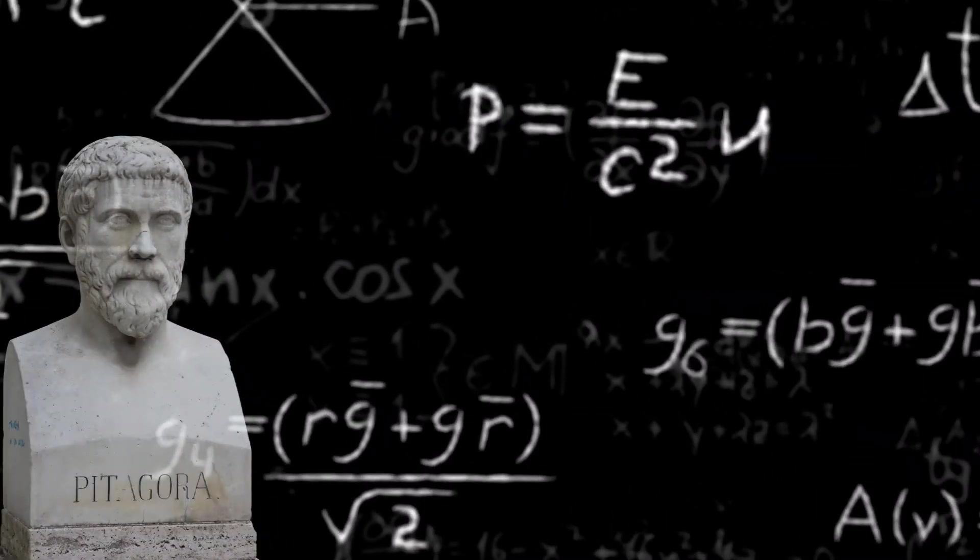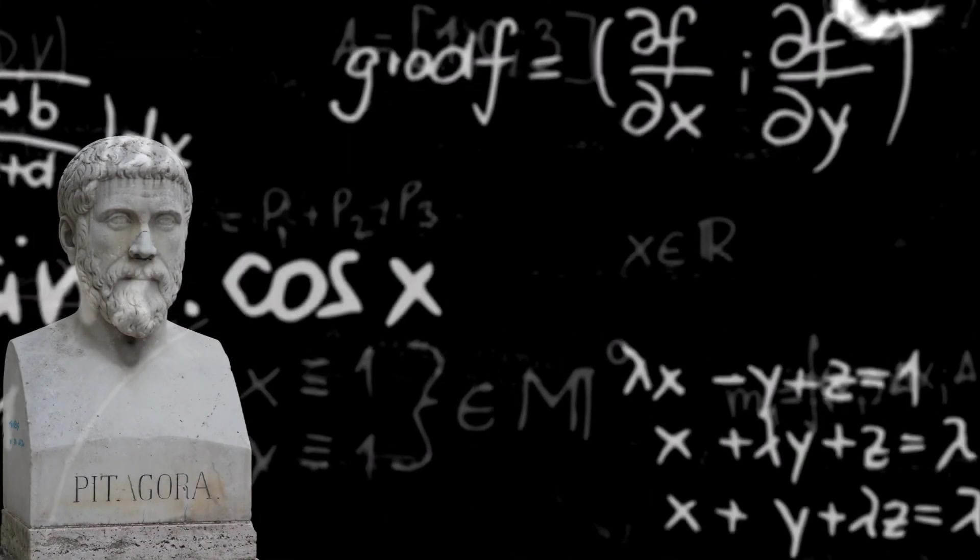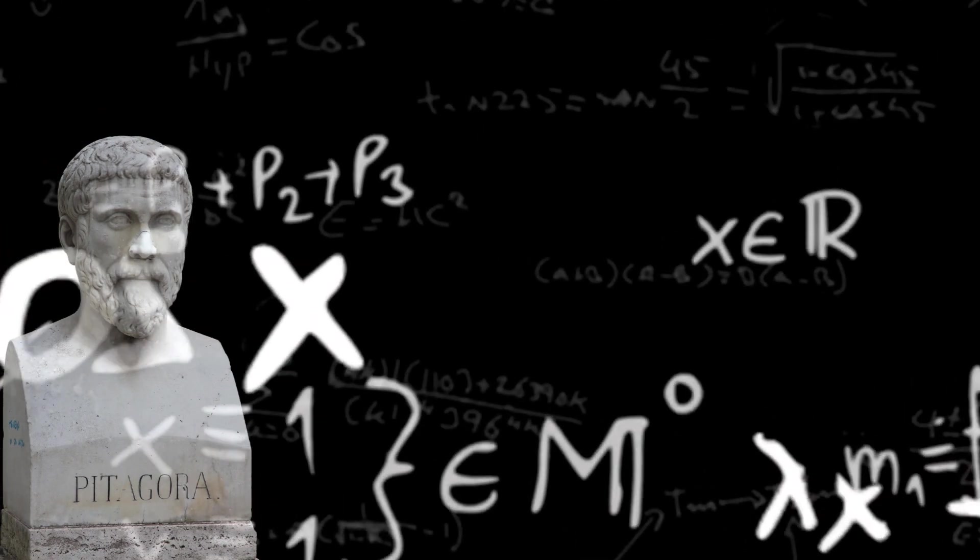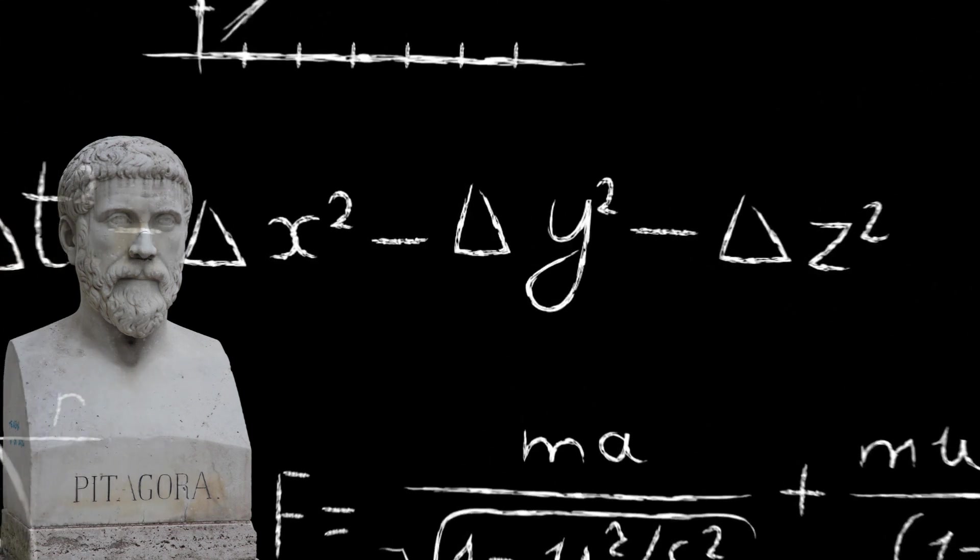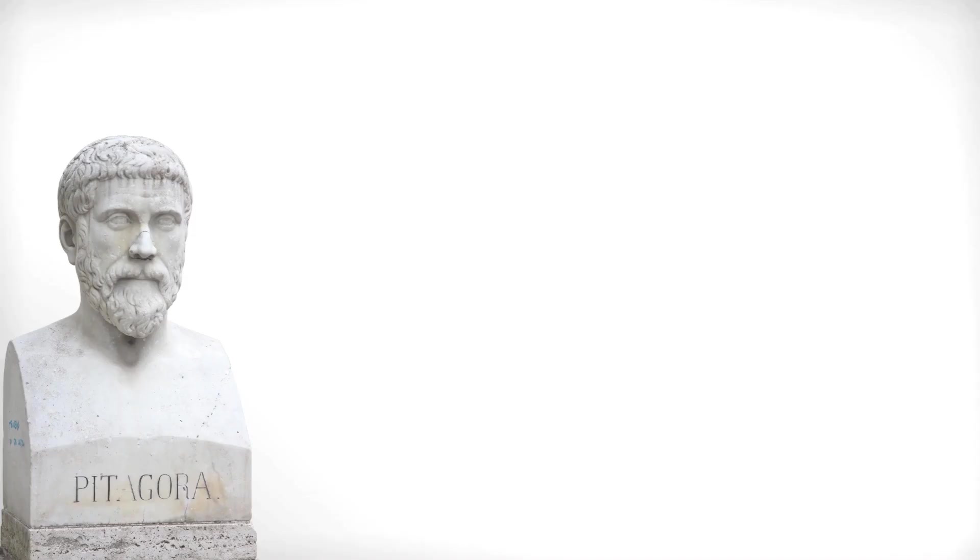Pythagoras and his students believed that mathematical relations were the basis of all reality and that mathematics governed everything. According to Pythagoras, numbers were sacred and everything could be measured and predicted thanks to mathematics.